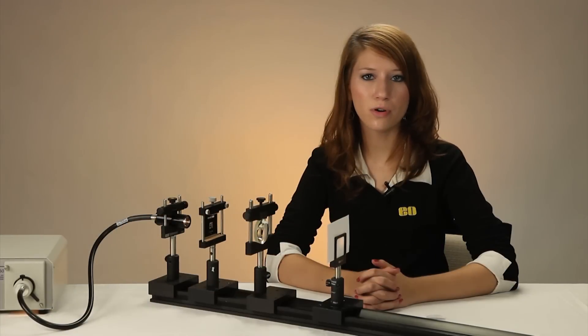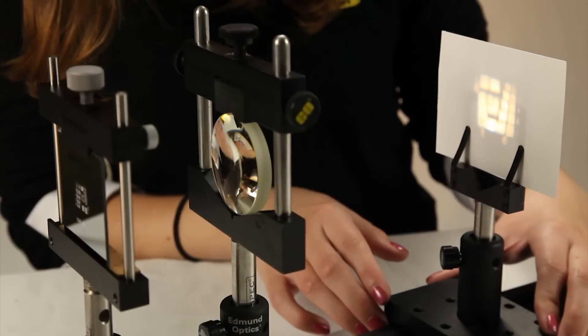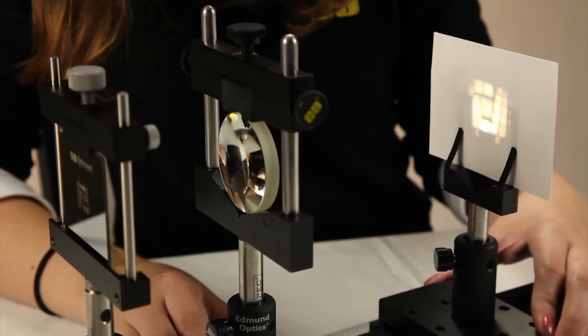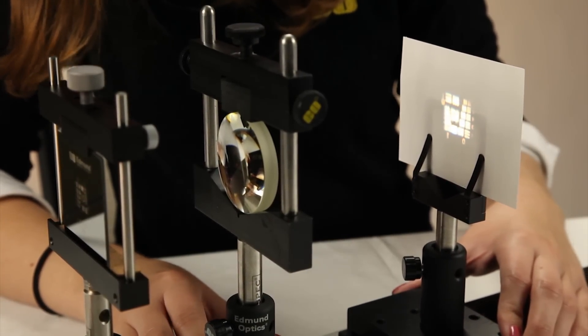In this second setup, once the lens is at least one focal length away from the object, an image will form as governed by the equation I just described. In this case, we will move the lens to be 70 millimeters from the object, so an image will form 175 millimeters away.